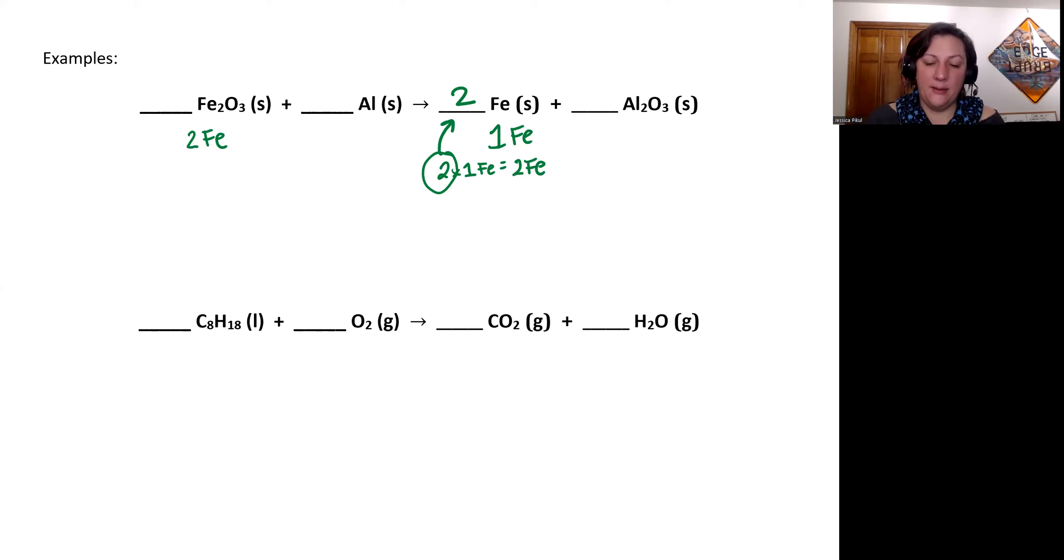All right, let's do aluminum next. In my reactant side I have one aluminum, and then I have two aluminum in my product side. So this is pretty similar. I'm going to focus on the one that has the least, which is the reactant side this time. And I'm going to choose a coefficient that when I multiply my number of aluminum atoms will equal that of my product aluminum atoms. So two times one aluminum will give me my two aluminum. So I'm going to put that two as my coefficient in front of my aluminum.